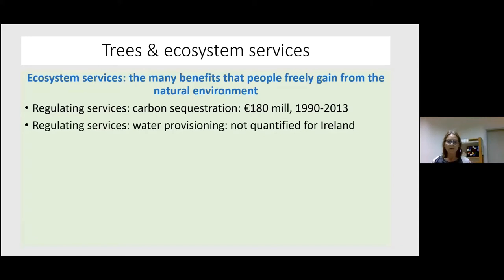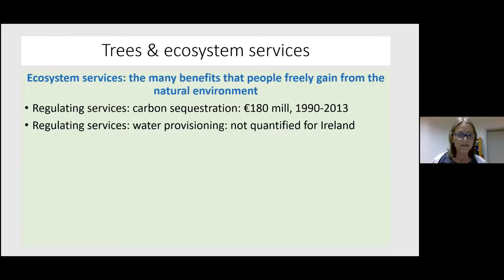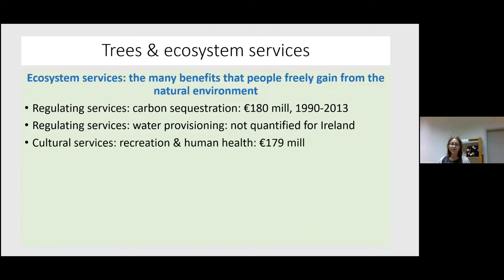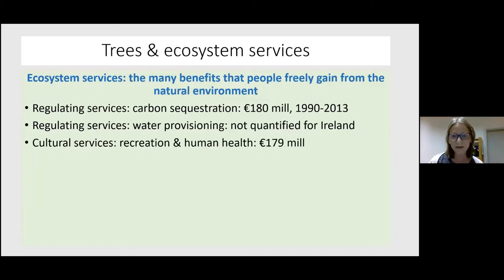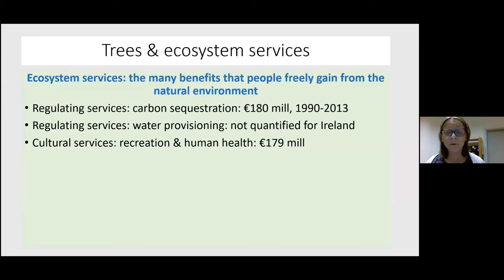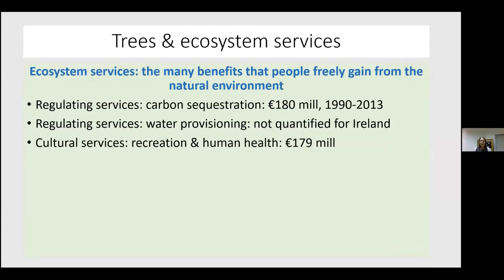With trees, ecosystem services are divided into different categories. The regulating services include carbon sequestration — the absorption and storage of carbon within their trunks, branches, roots, and surrounding soil. This was worth £180 million between 1990 and 2013 in Ireland. Trees also play an important role in flood control, runoff, and water table regulation. Cultural services include recreation, landscape value, and human health. Research from Japan on forest bathing shows that being among trees has a huge impact on mental health — people suffering from mental health issues may experience reduced suicide ideation and improved moods. This is worth €179 million in Ireland.